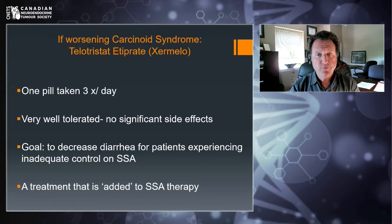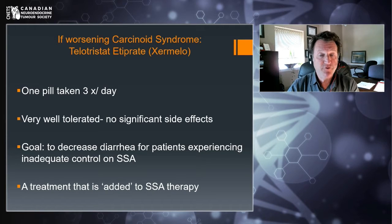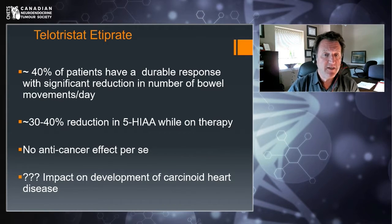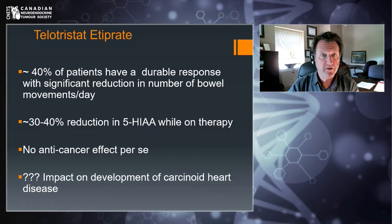A newer treatment for patients with worsened syndrome is telotristat, which is one pill taken three times a day, very well tolerated without significant side effects. The sole goal is to decrease diarrhea for patients experiencing inadequate control on somatostatin analogue treatment — it's added to the injections, not instead of them. About 40% of patients have a durable benefit with significant reduction in diarrhea and a reduction in 5-HIAA. Usually those who will benefit know within a couple of months. There is no anti-cancer effect — it's purely to control symptoms.